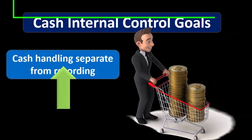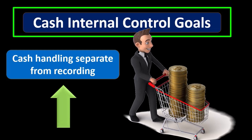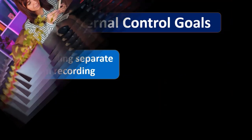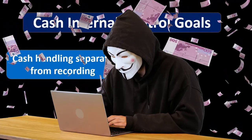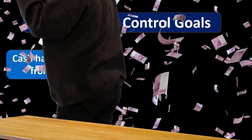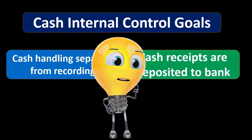We want to have the cash handling separate from the record keeping. Whoever is handling the cash, we would like them not to be the same person doing the record keeping. We have that separation of duties — the person entering the data doesn't have as much incentive to steal the cash because they're not the ones handling it. The people handling the cash know that if they do steal it, the record keeping should pick that up, and it's handled by a separate person.